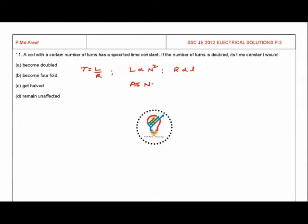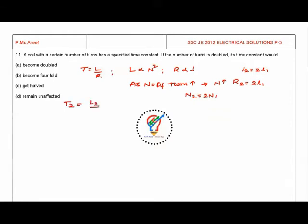As the number of turns increases, N2 is 2 times N1. Similarly, R2 is 2 times R1. L2 is 2 times L1 initially, but since L is proportional to N squared, substituting N2 = 2N1 gives L2 = 4 times L1. So T2 equals L2 divided by R2, which is 4L1 divided by 2R1.